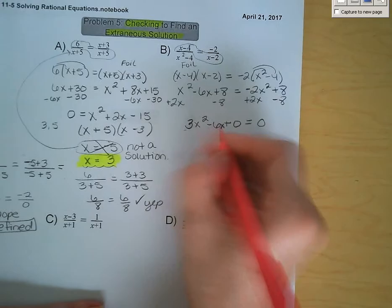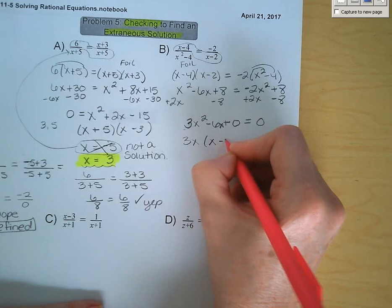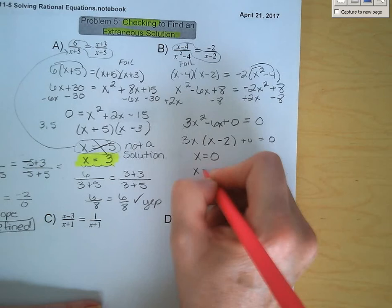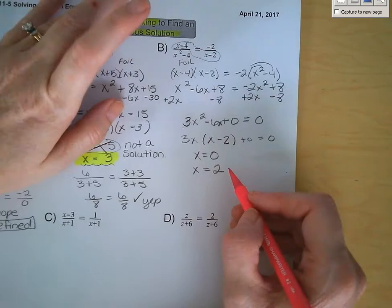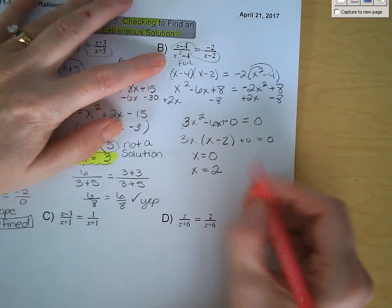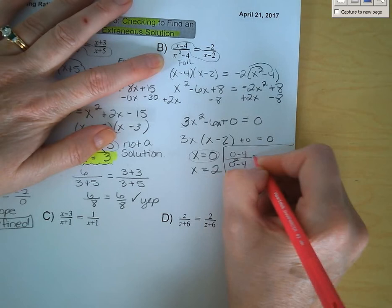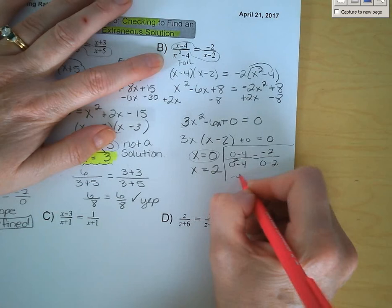Setting that equal to 0, we have two solutions: positive 2 and 0. Let's plug those in and see which ones work. For x equals 0: 0 minus 4 over 0 squared minus 4 is equal to negative 2 over 0 minus 2, giving us negative 4 over negative 4 equals negative 2 over negative 2. Both simplify to positive 1, so yes, that is a solution.